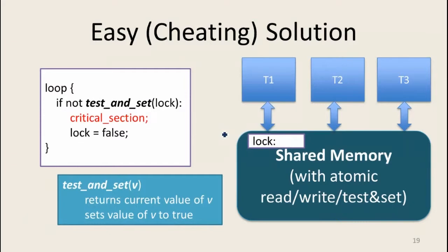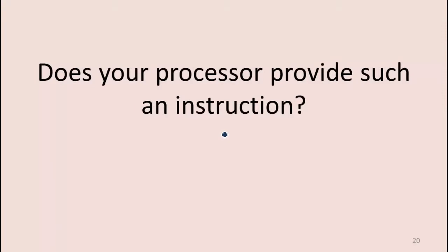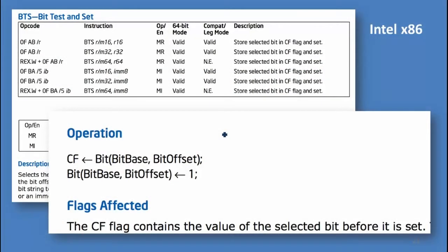Here's our code with test-and-set. Do actual processors have instructions like this? You couldn't take a processor that only provides read and write and build a test-and-set, but you can design hardware and memory systems that provide it. Most modern processors — even those going back at least 20 years — had a test-and-set instruction. x86 has the BTS instruction, which does a bit test-and-set. It atomically sets the CF flag with the current value of the bit and sets the bit to one — exactly what we described.